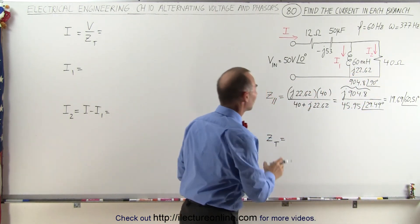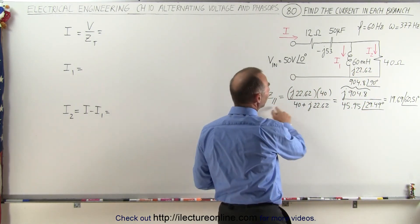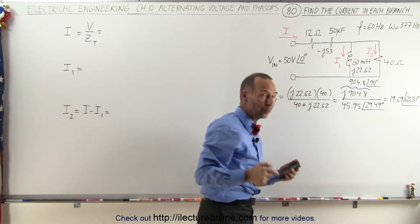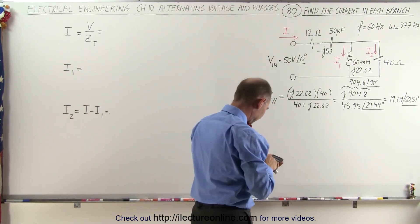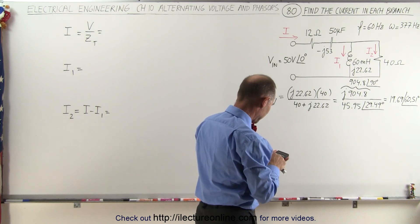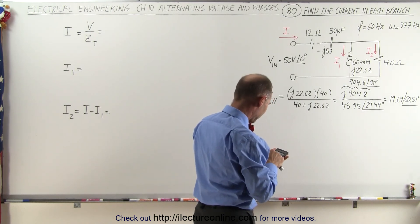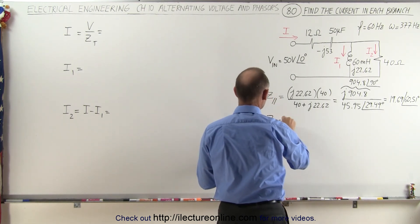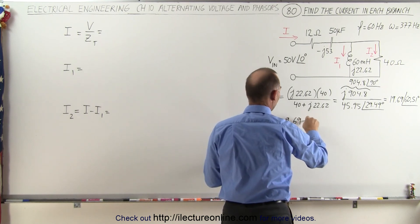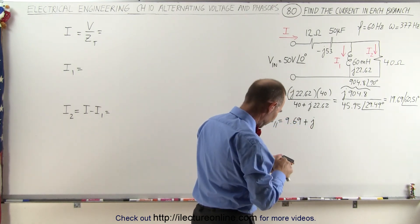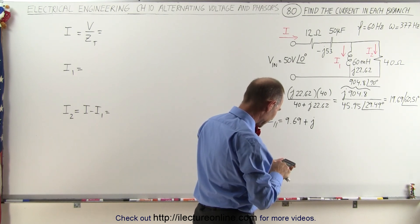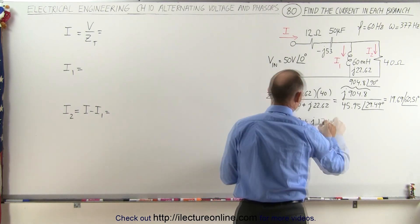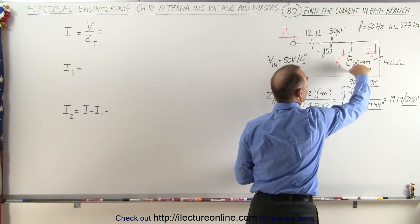That gives us Z parallel. Since we're going to have to add the parallel branch to the impedance of the other components, let's write this in real and imaginary part format. We take the cosine of 60.51 times 19.69, and that gives us 9.69. So Z parallel is equal to 9.69 plus J, and we have sine of 60.51 times 19.69, which gives us 17.14. So now we have the parallel impedance of these two components.